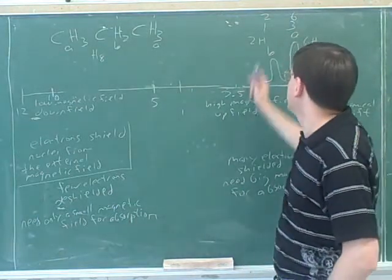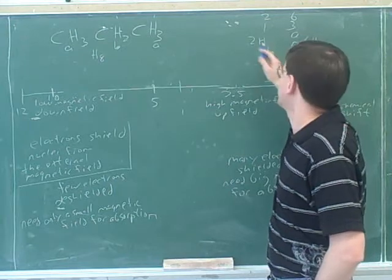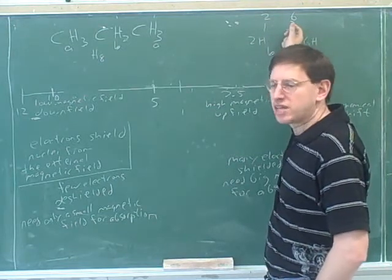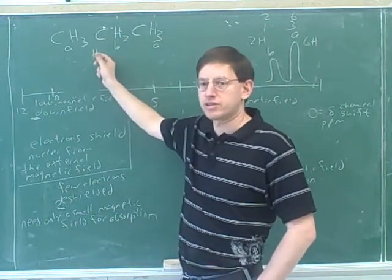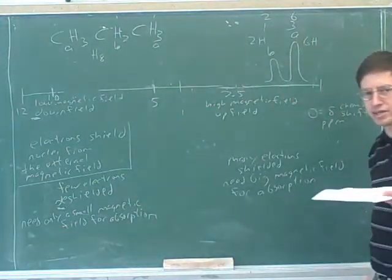So sometimes the computer is smart enough to give you the exact right number of hydrogens and sometimes it just gives you the ratio. But even if you're just given the ratio, you can figure out the exact number of hydrogens because you will know the total number of hydrogens over here. So that's the information that we're getting from the integration.